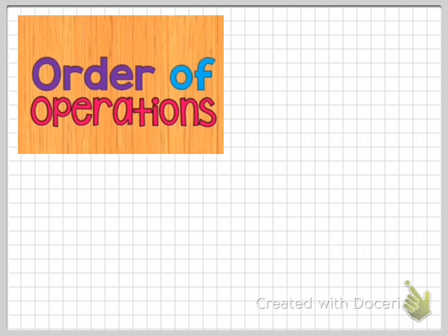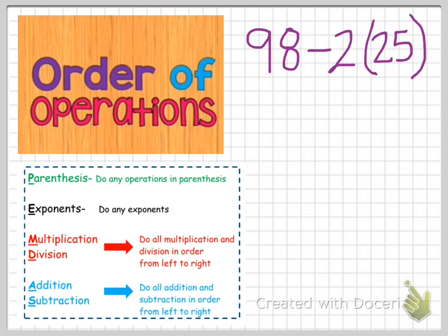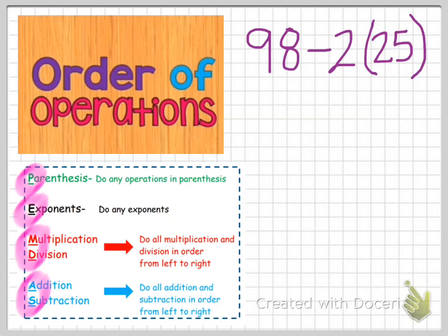Let's take a look at that same problem about the unicorn pool float in a little bit more detail. Many of us have heard of the acronym PEMDAS to help us remember the steps for the order of operations. One thing I want to comment on is that a lot of people think there are six steps to the order of operations — PEMDAS has six letters — but notice how the way I have them grouped, it's really only four steps.